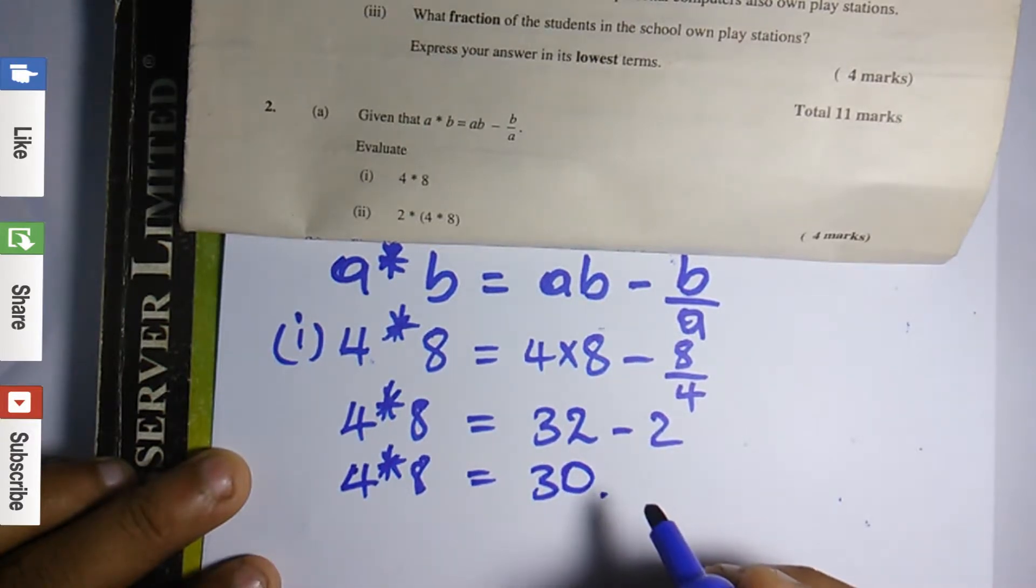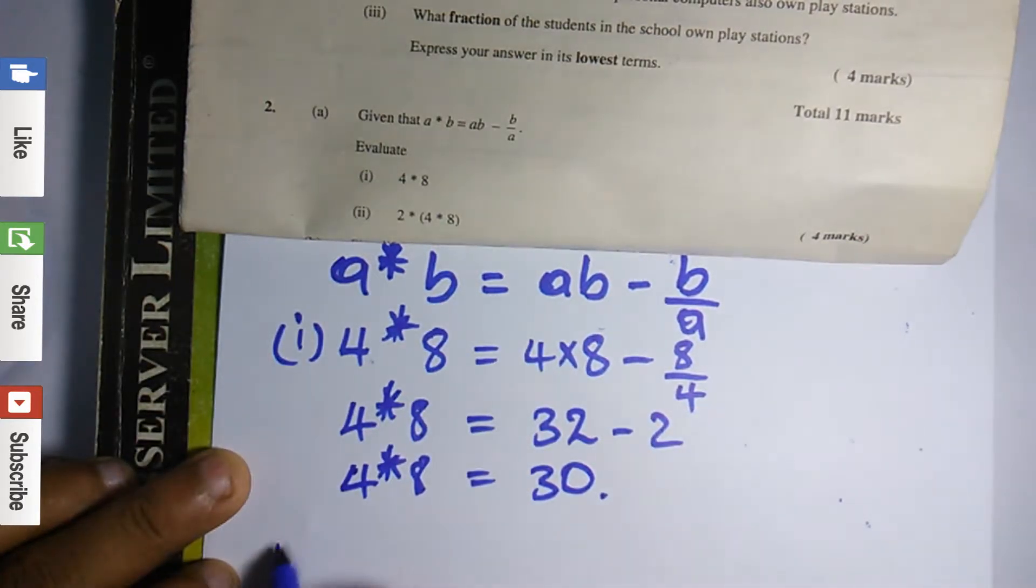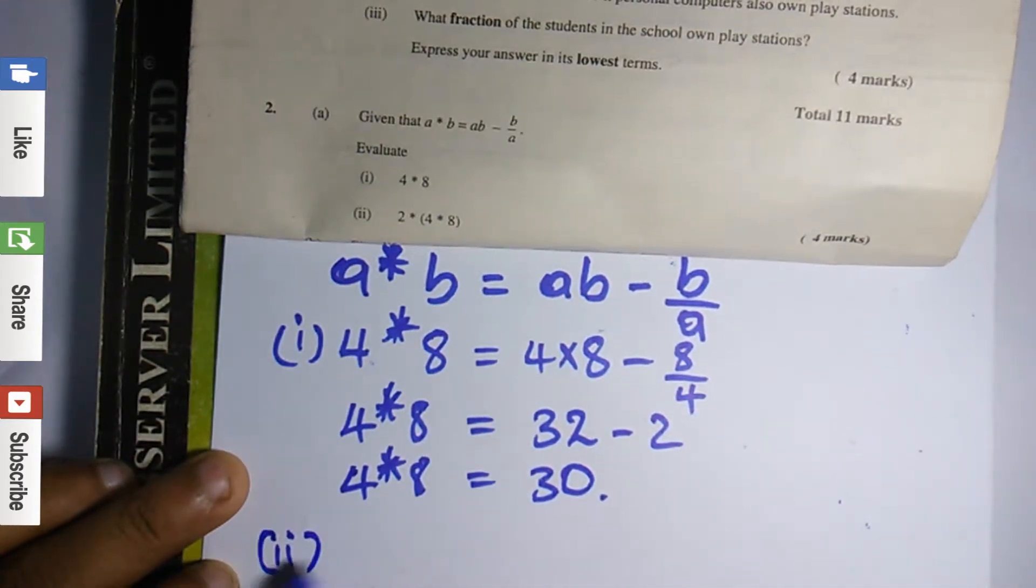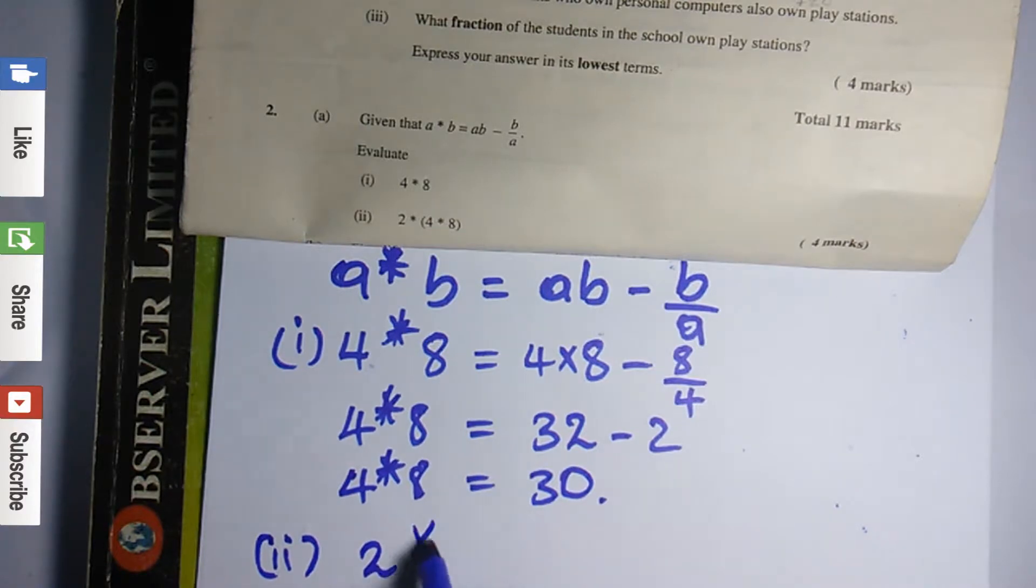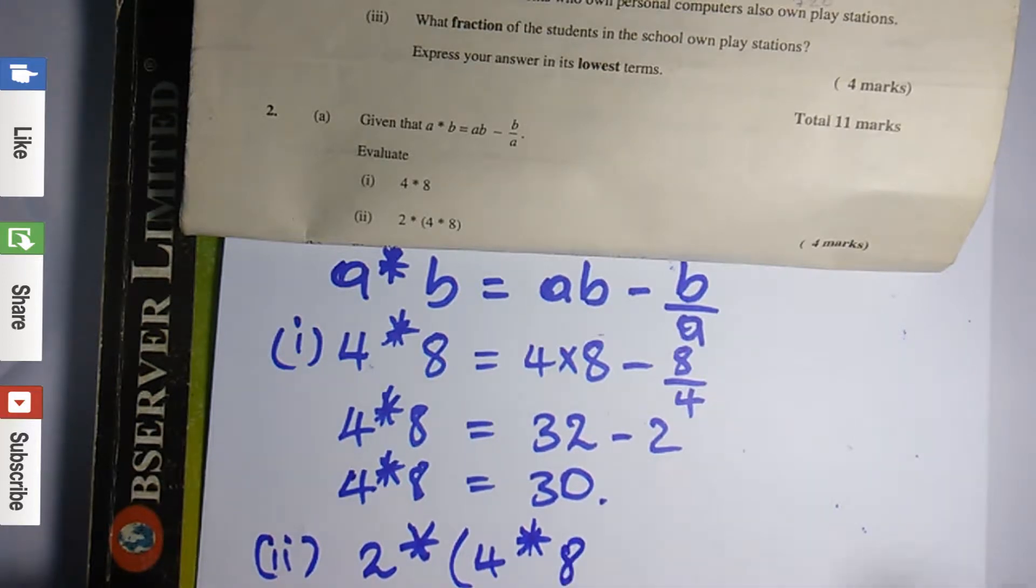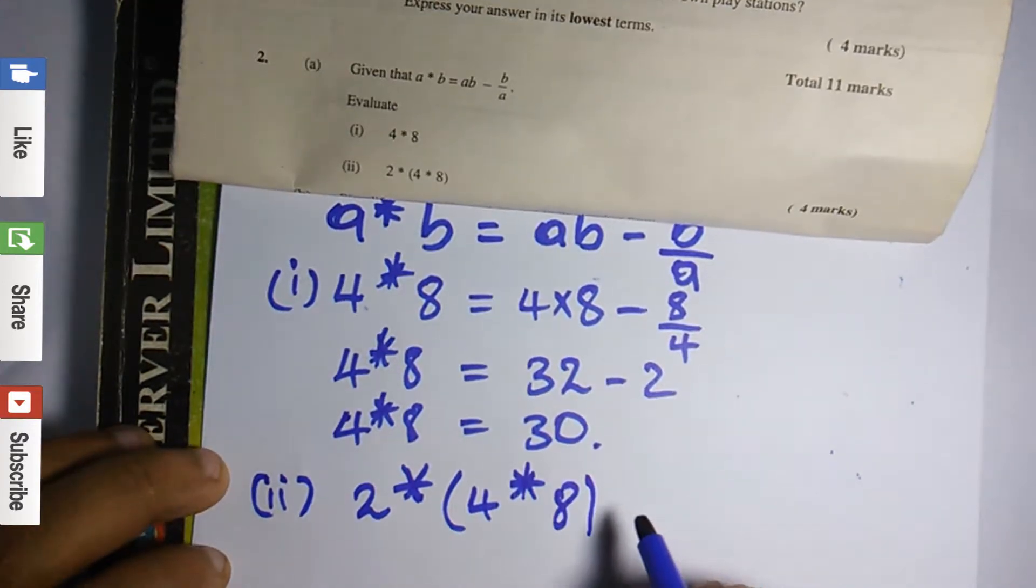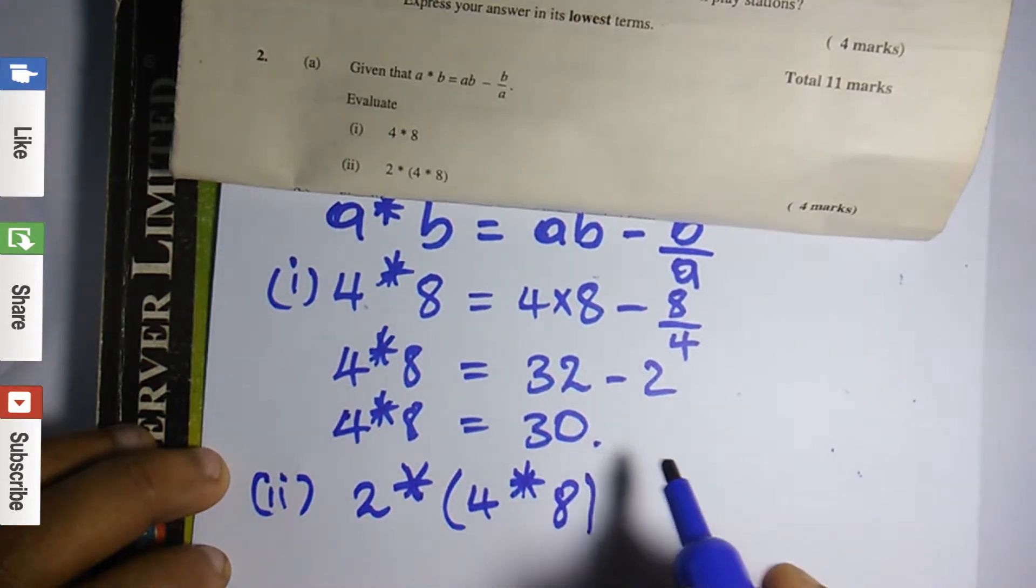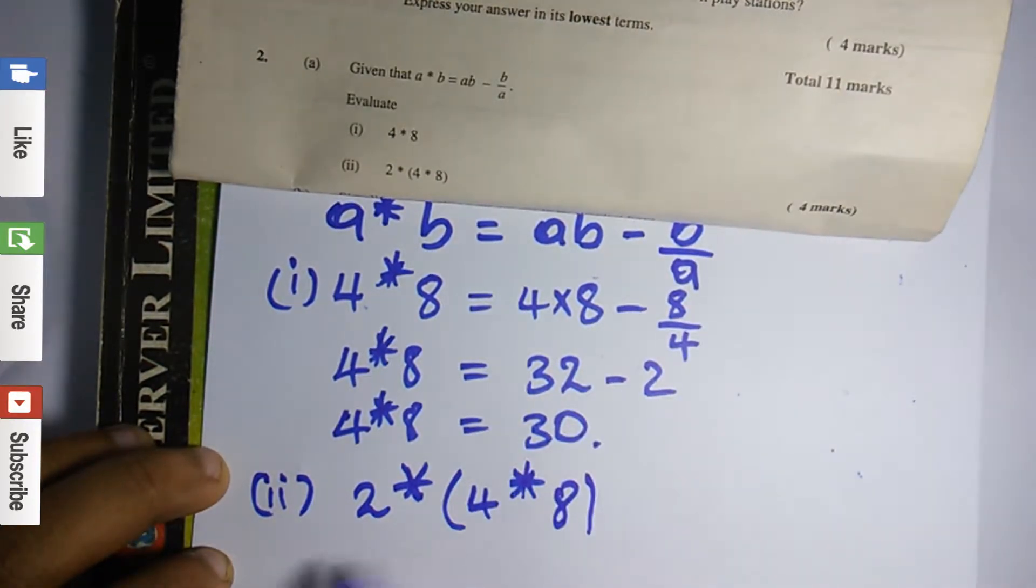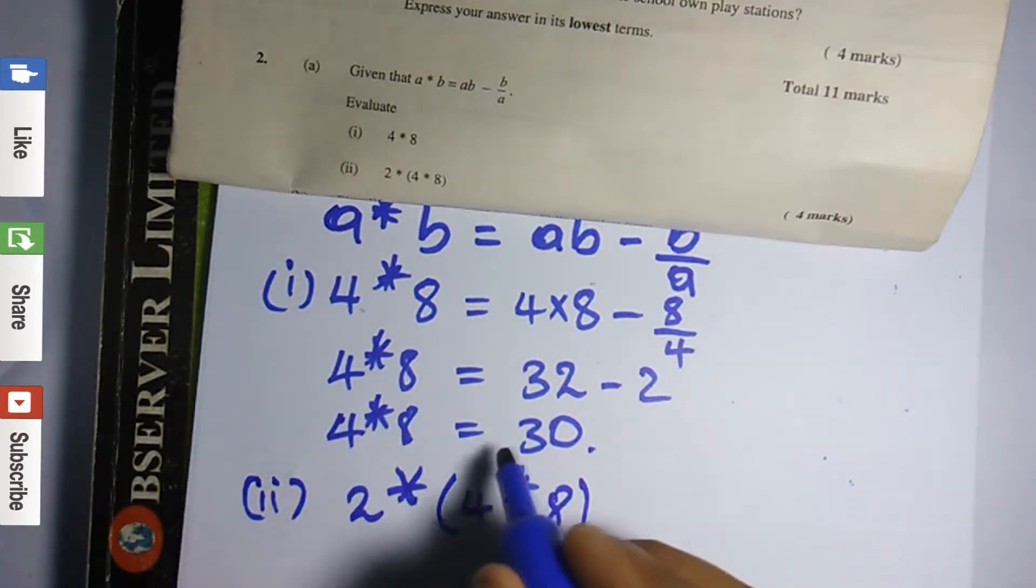Now with this question, the second part attached to it says we're supposed to also solve for 2 asterisk bracket 4 asterisk 8. Now in the exam I'm advising you to pay attention because sometimes the first part of the question is related to the second question. For example, this one: 4 star 8 is equal to 30.